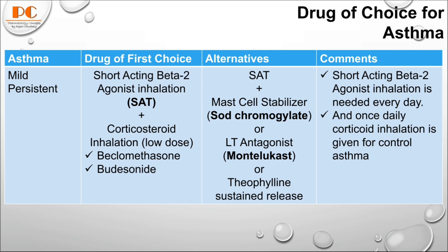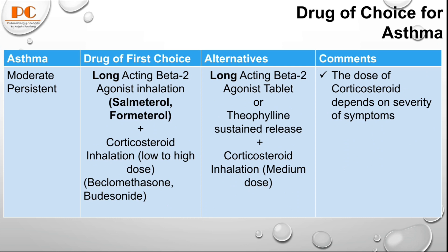Another alternative is theophylline sustained release. The short-acting beta-2 agonist inhaled is taken daily as needed, and once-daily inhaled corticosteroid is given for asthma control. In moderate persistent asthma, we use long-acting beta-2 agonists like salmeterol and formoterol with inhaled corticosteroid at low to high dose depending on severity.